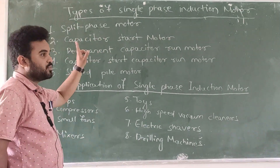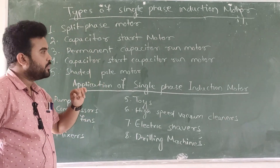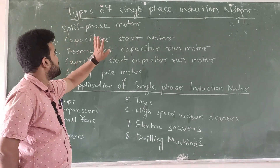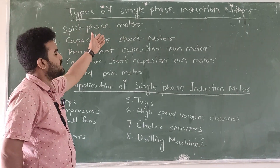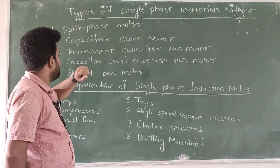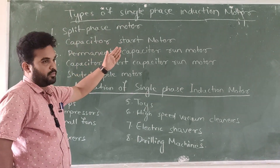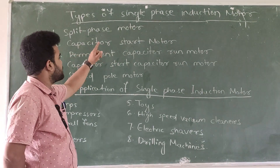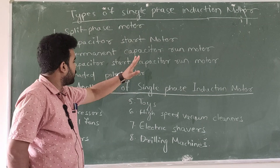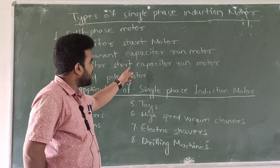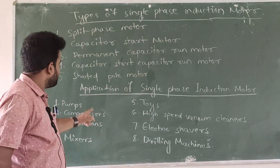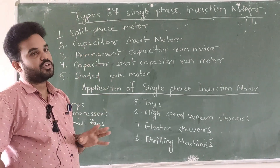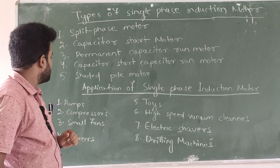The types of single phase induction motor are: first, split phase motor; second, capacitor start motor; third, permanent capacitor run motor; fourth, capacitor start capacitor run motor; and fifth, shaded pole motor. These are the five types of single phase induction motor.